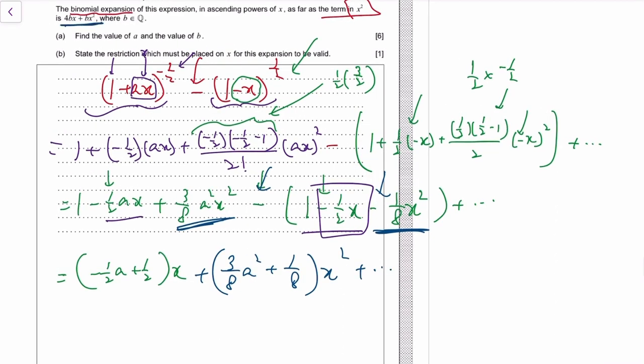The question says it should equal to 4bx plus bx squared. So negative half a plus half equals 4b, and 3 over 8 a squared plus 1 eighth equals b.